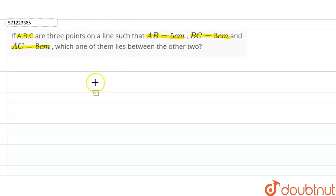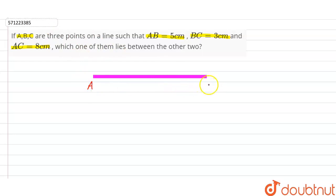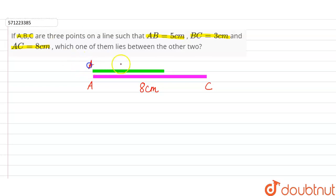Let's make a line segment. This is the line segment. Now the values are given — this is A and this is C. Firstly, let's take the distance between A and C, which is 8 centimeters. The distance between A and B is 5 centimeters, so this is A and this is B.